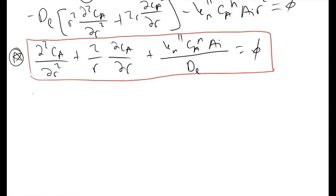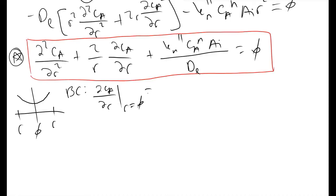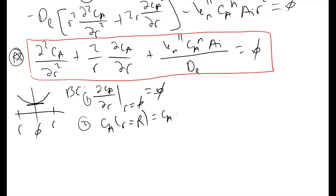To solve equation star, we set boundary conditions. At the centerline by symmetry, the slope must be zero: dC_A/dr at r = 0 equals 0 — this is boundary condition 1. Boundary condition 2 is that C_A evaluated at r = R (the full pellet radius) equals the constant C_AS, the surface concentration. Applying these two boundary conditions and integrating equation star gives us C_A as a function of r, useful if you want to know the concentration at a particular radial position inside your pellet.